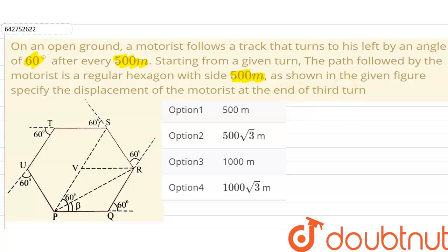Okay, so in the given question we have been given that a motorist follows a track of a regular hexagon. The side of the regular hexagon is given to us as 500 meters. Now let us suppose that our motorist starts from the point P.